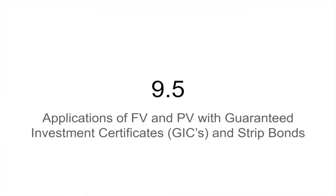But we could also have other types of investments called strip bonds. Strip bonds are kind of working backwards — you know how much money you're getting at the end, but you need to know how much you've got to pay to buy that right now. It's like a guaranteed payment at some point in time in the future. So we're going to look at these two.